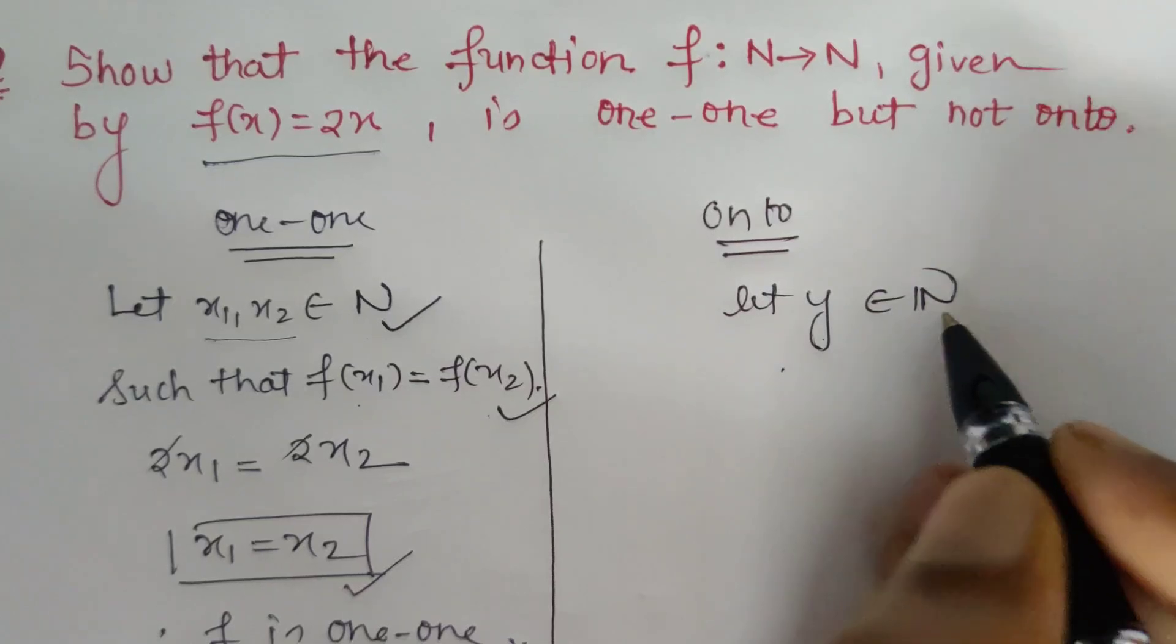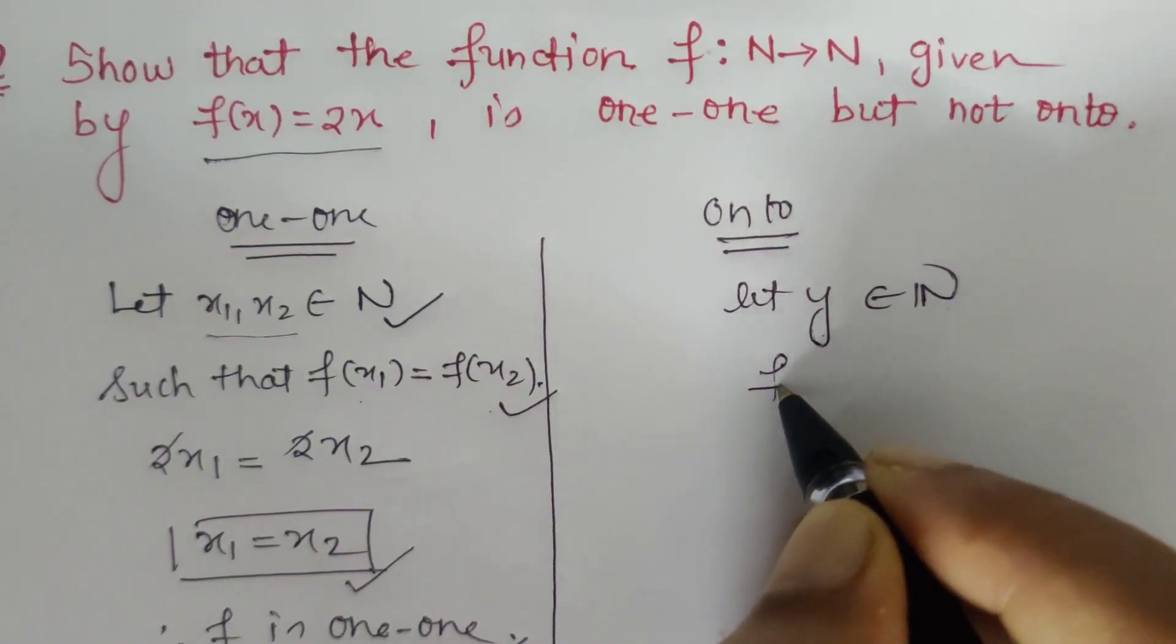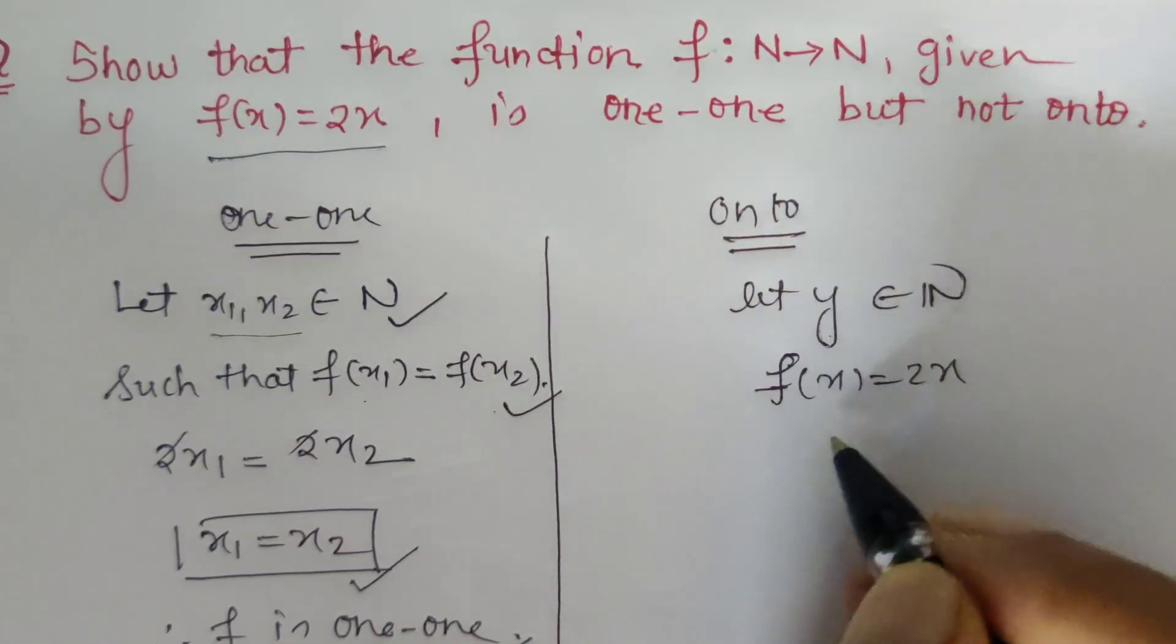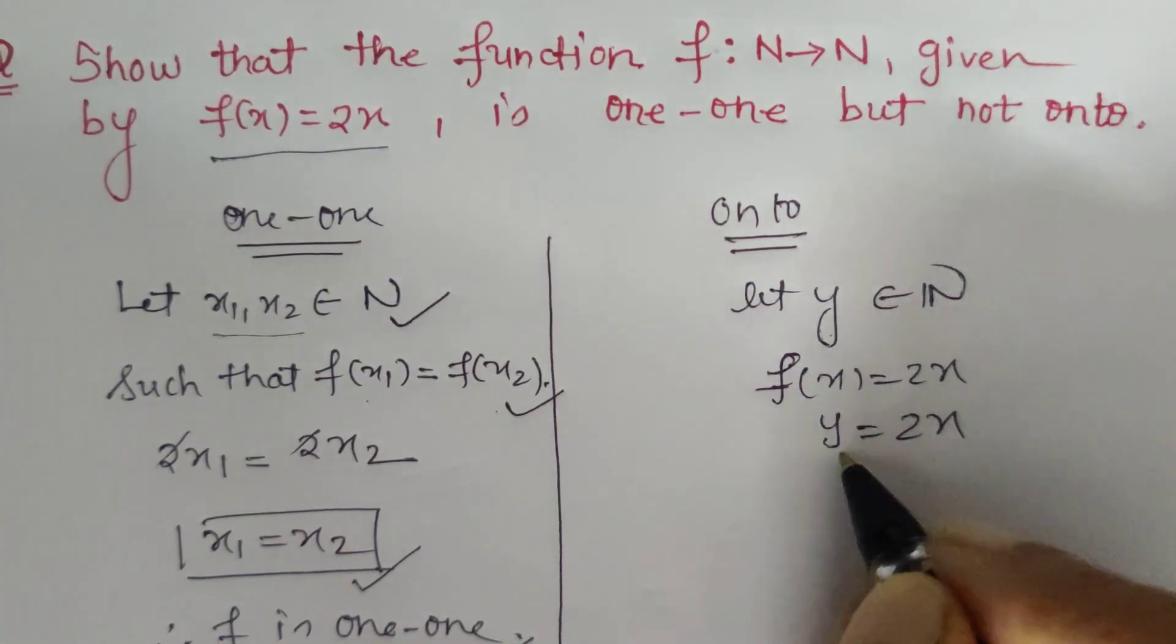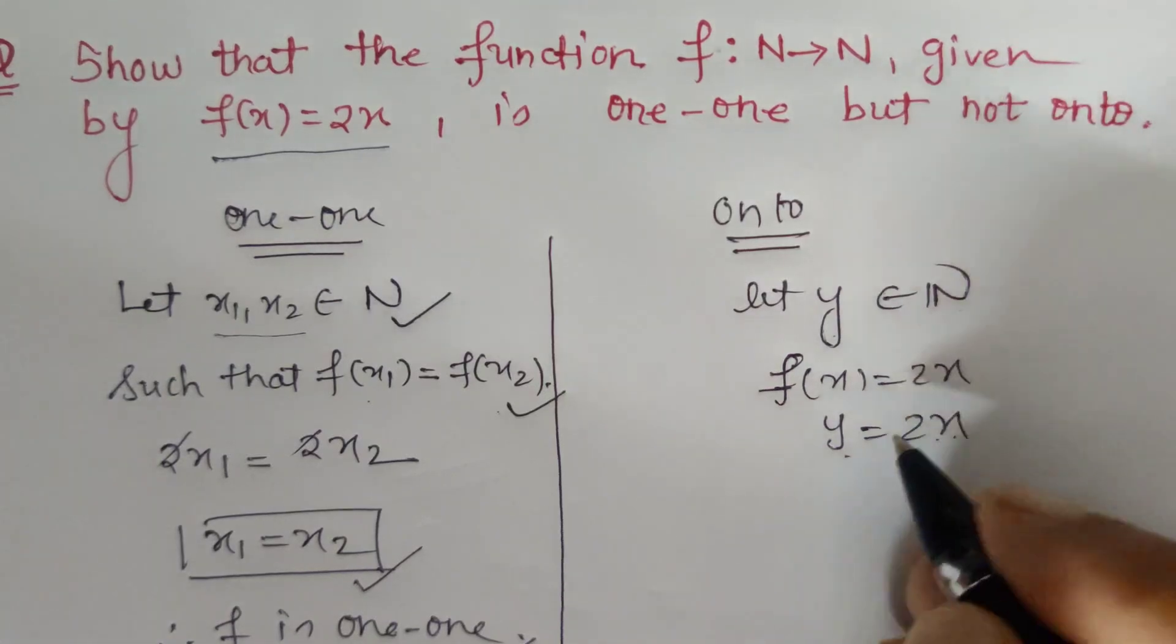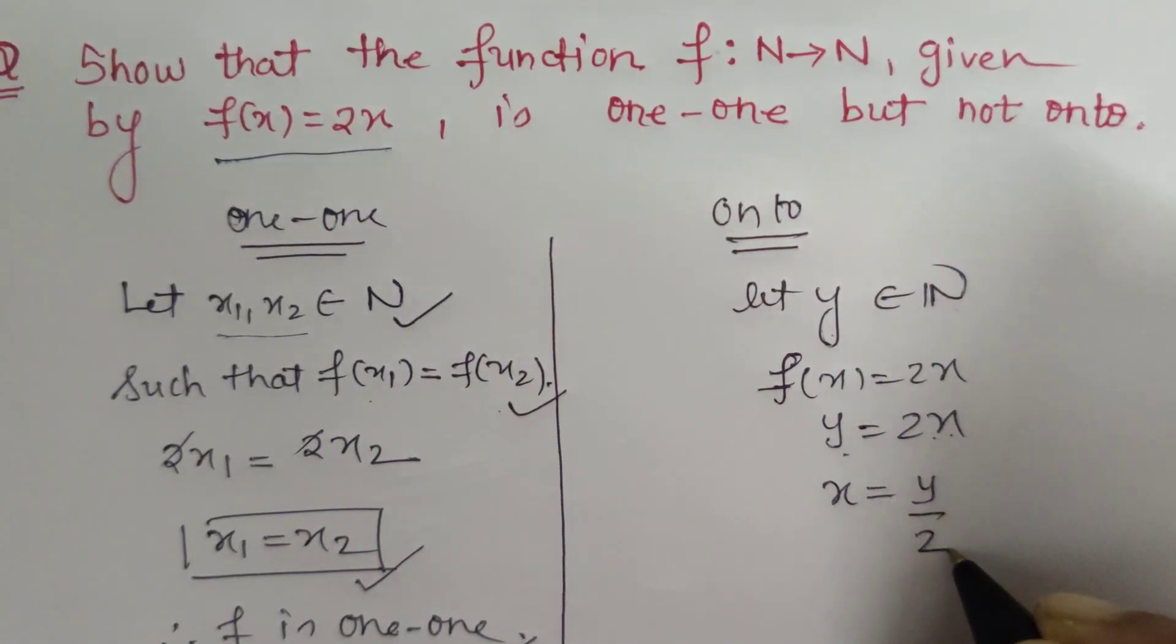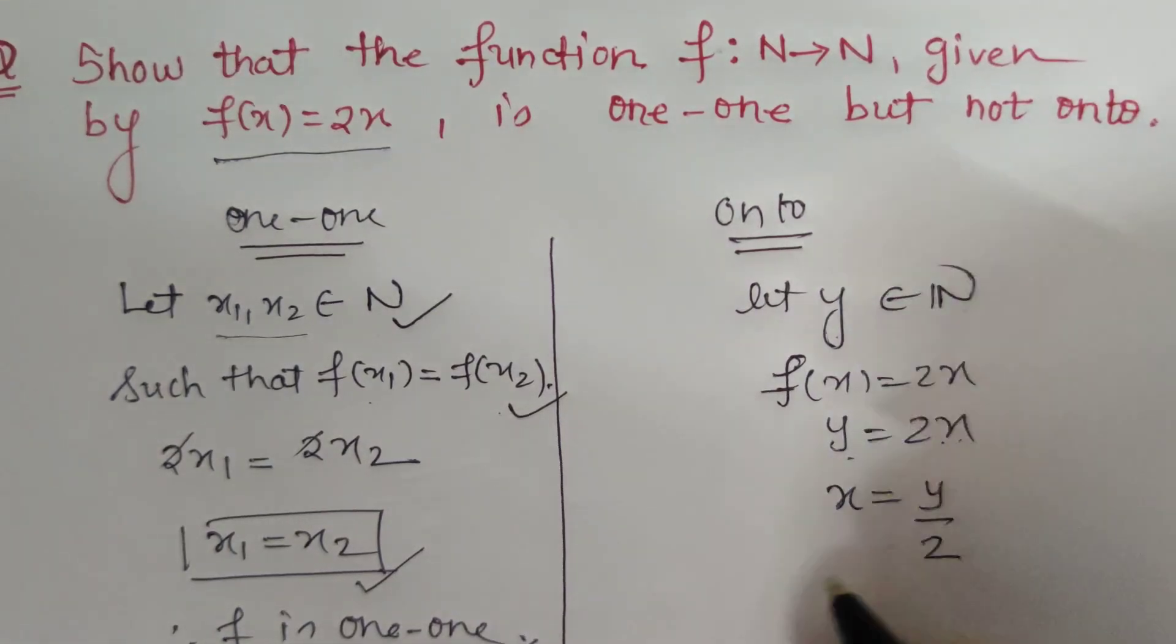So if I write fx equals 2x and fx is nothing but y, so y equals 2x. Now let's write x in the form of y: x equals y/2.